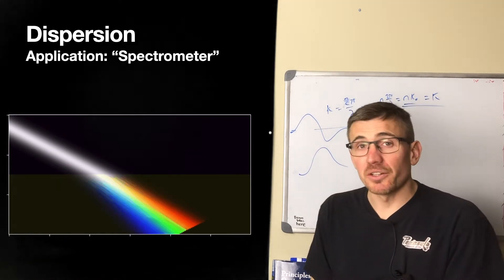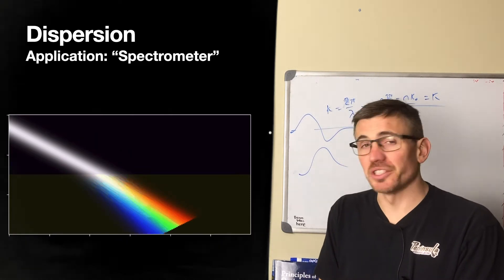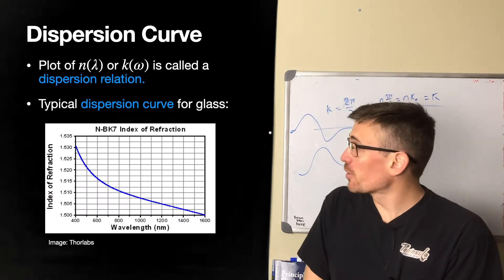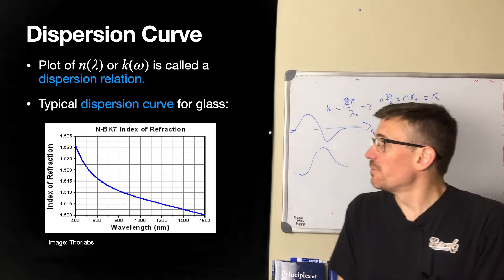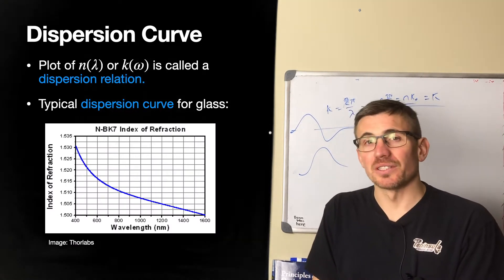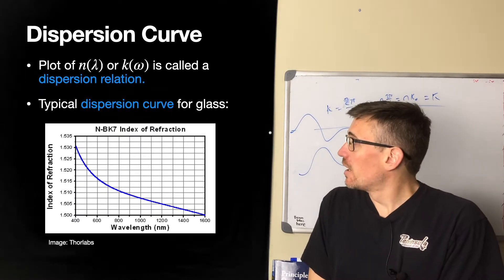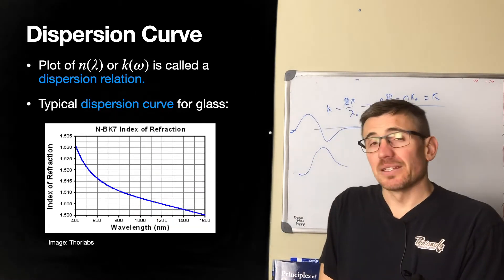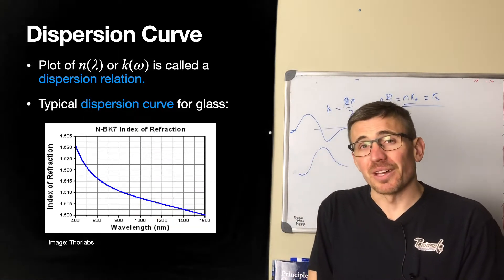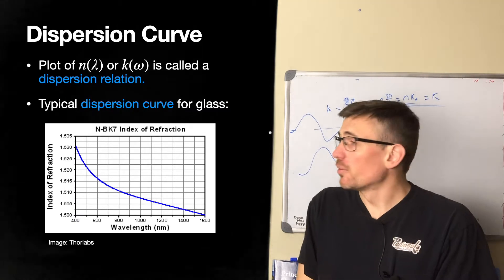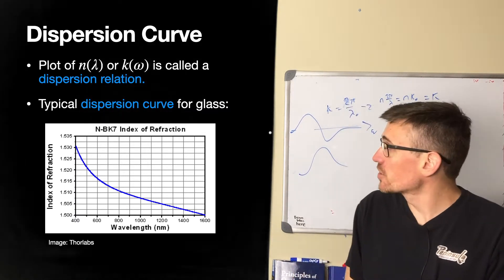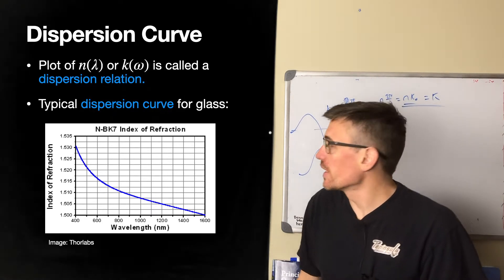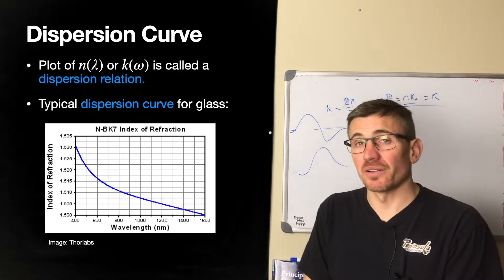Most materials have some dispersion. Any material that has resonances — which is all materials — will have some dispersion. Here's what a typical dispersion looks like for BK7 optical glass, which is used in many experiments. It has a dispersion curve that doesn't change too much, but it changes enough to give that prism-like effect. Nomenclature: whenever you see either n as a function of lambda or omega as a function of k, that's called a dispersion curve or dispersion relation.